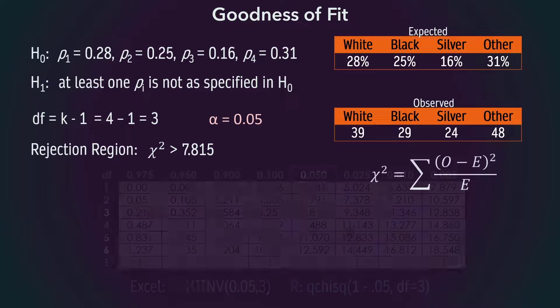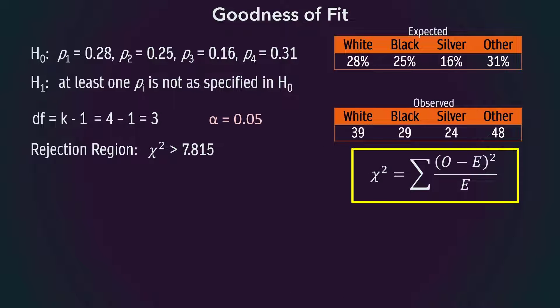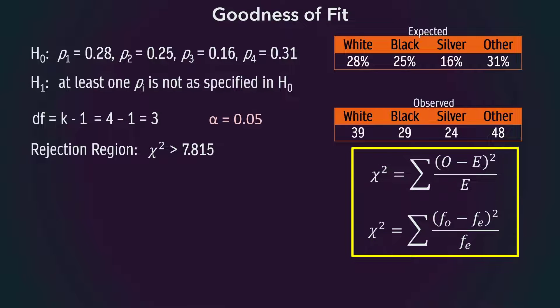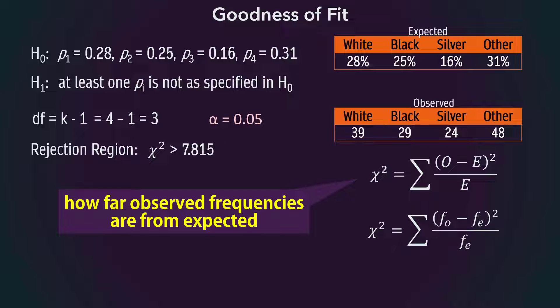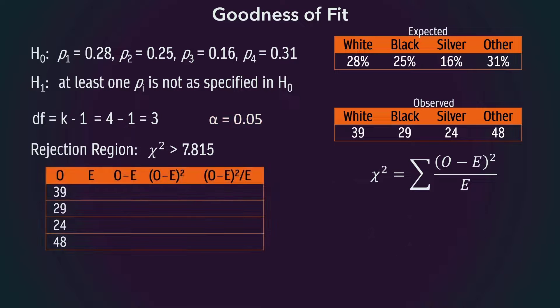The formula for calculating the chi-square statistic is shown here, or sometimes in this format, where O represents the observed frequency and E represents expected frequency. The test statistic is a measure of how far the observed frequencies are from expected, and it's easy to compute using a table setup like this one.